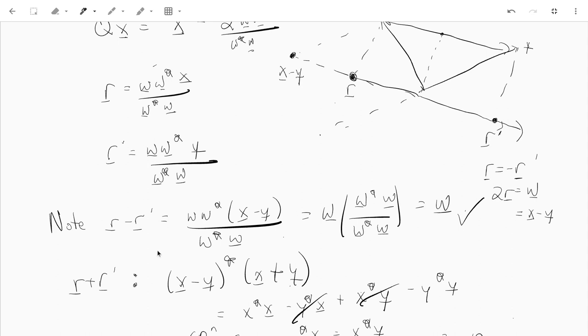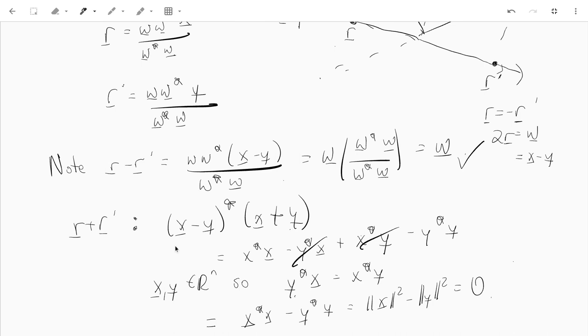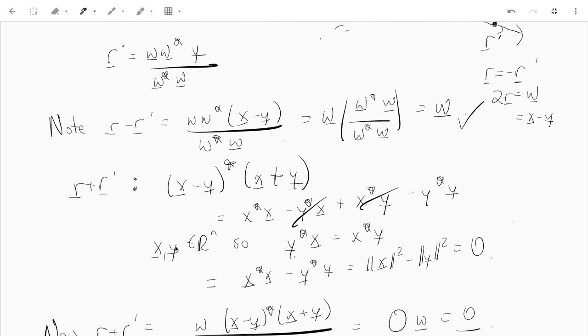Now we want to check that r plus r prime is zero. And that will kind of give, everything will kind of follow from that. Well, r plus r prime, to calculate that, we just have to calculate x minus y star times x plus y. And we'll see that this is actually zero.